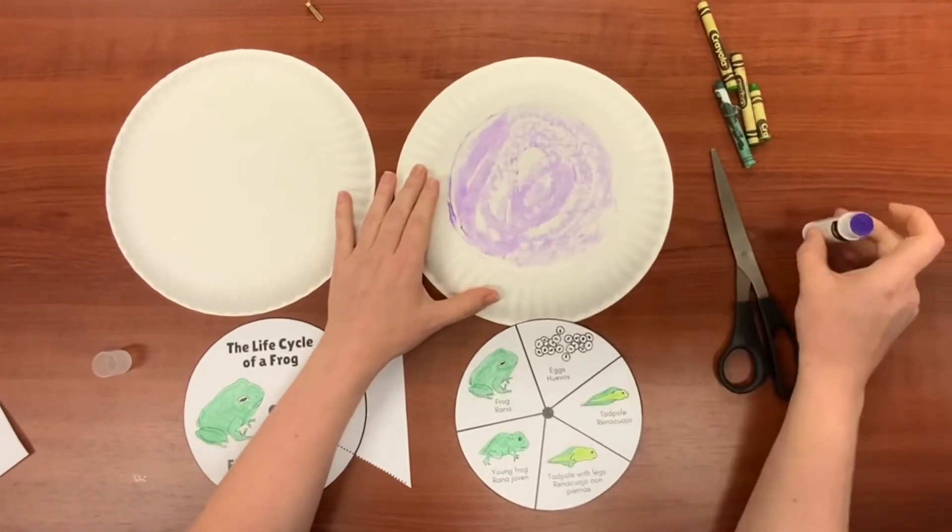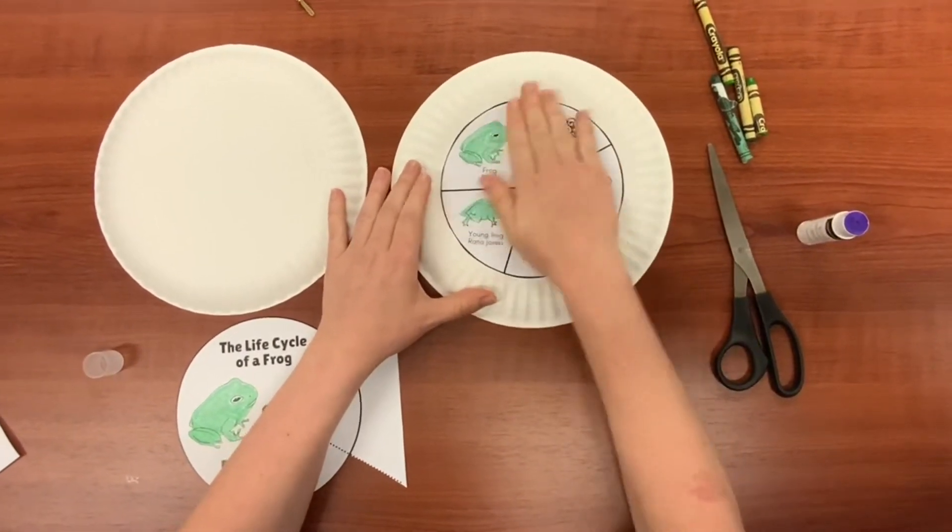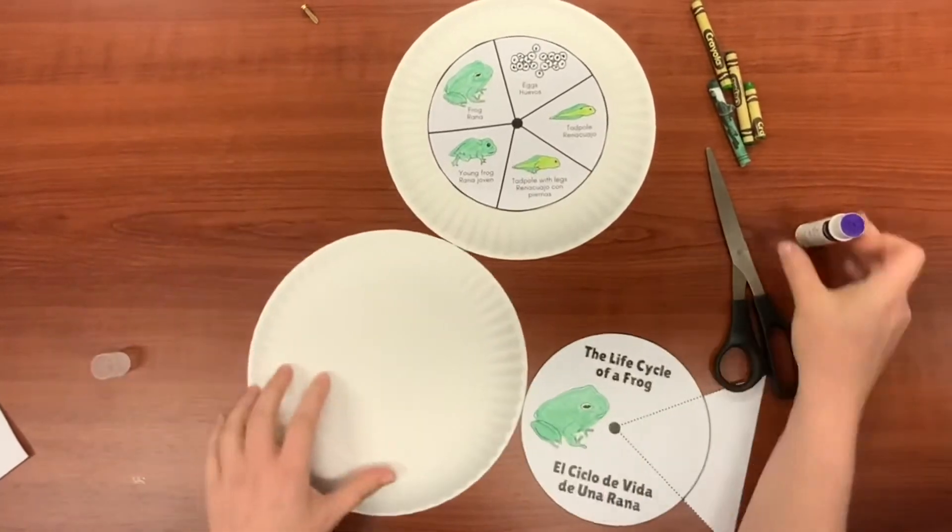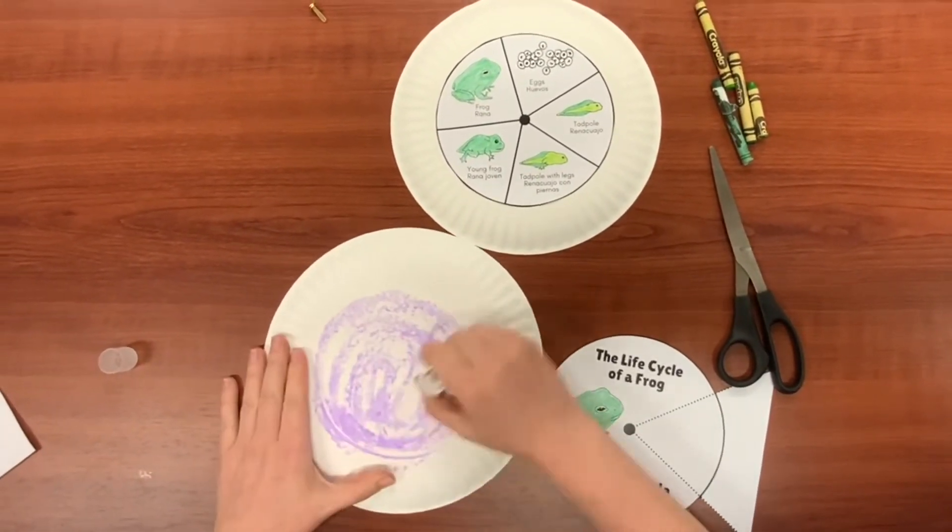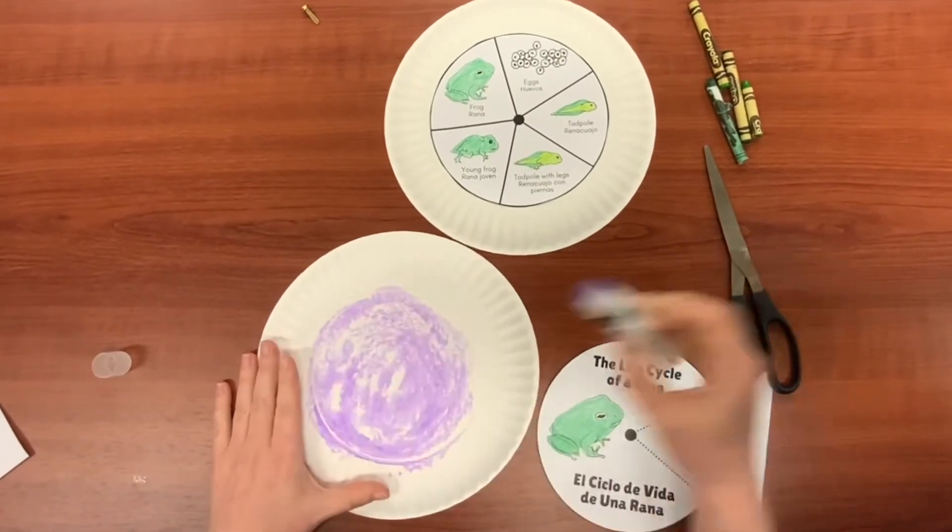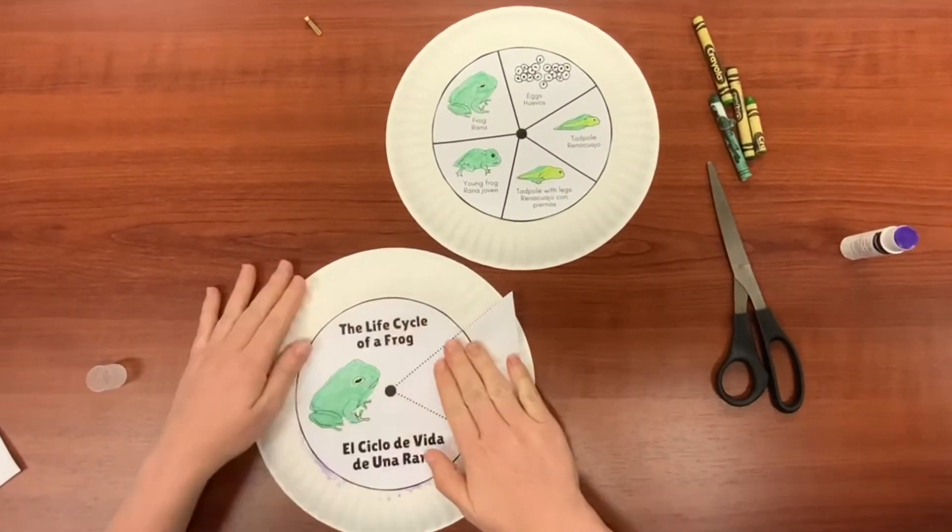Get a good layer on there. Line up our first sheet and smooth it into place. And now do the same with the second sheet. Make sure the black dot lines up with the center of the plate.